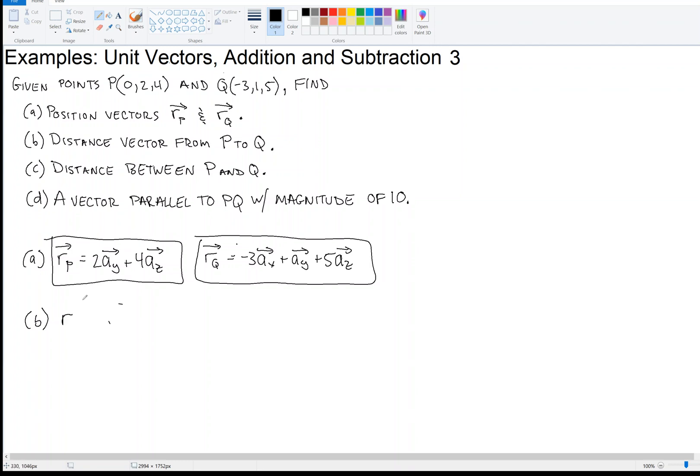So that is, we write that as R sub PQ, the distance from P to Q. So that is defined as the distance vector Q, or the position vector Q, minus the position vector P. Alright, so we can do that, right? We know how to add and subtract vectors, maybe.